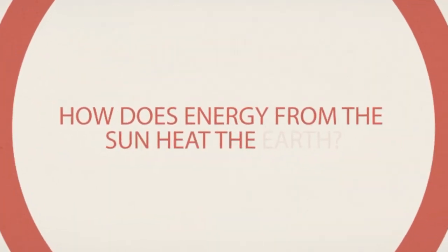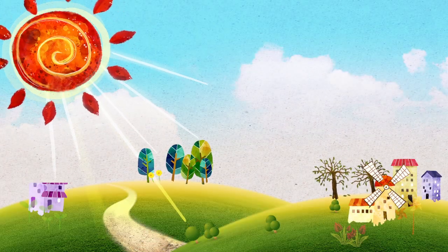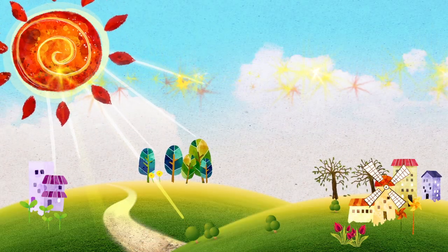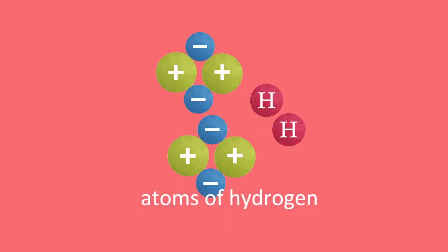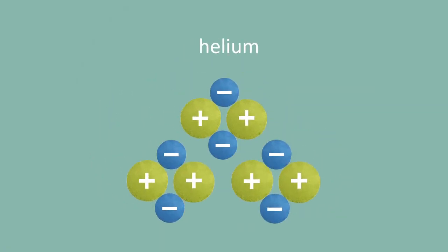How does energy from the sun heat the earth? First, the sun must create the energy we call sunlight. This is done through a process called fusion. Because of the extreme heat and pressure found in the center of the sun, atoms of hydrogen are combined to form helium.